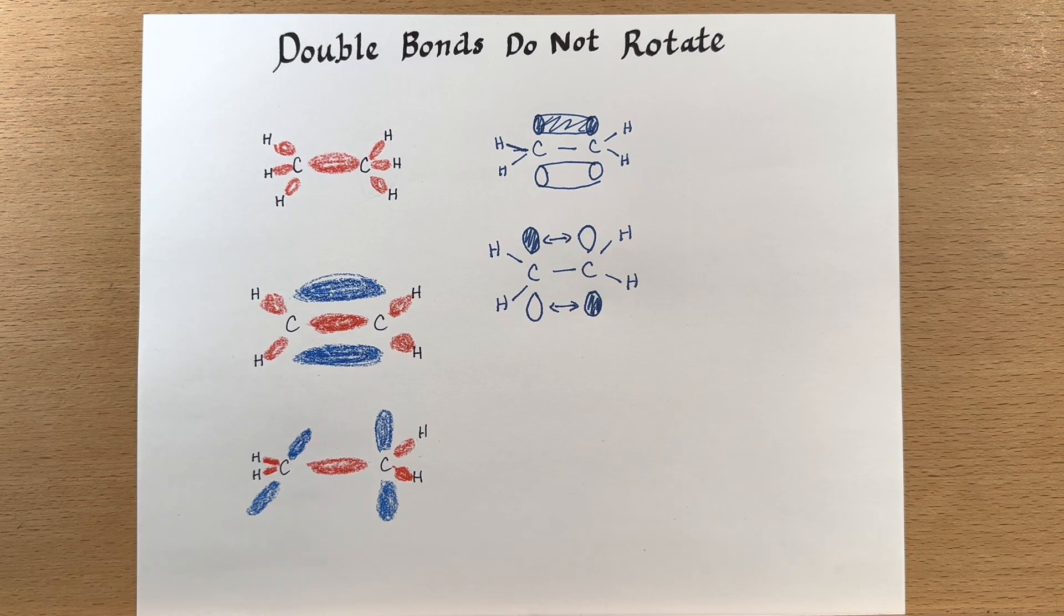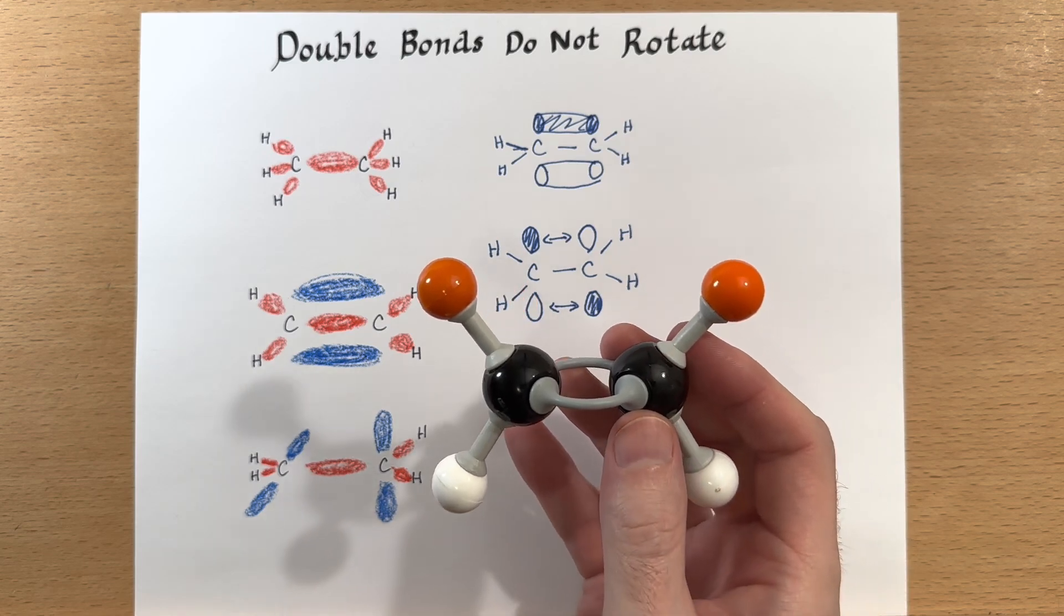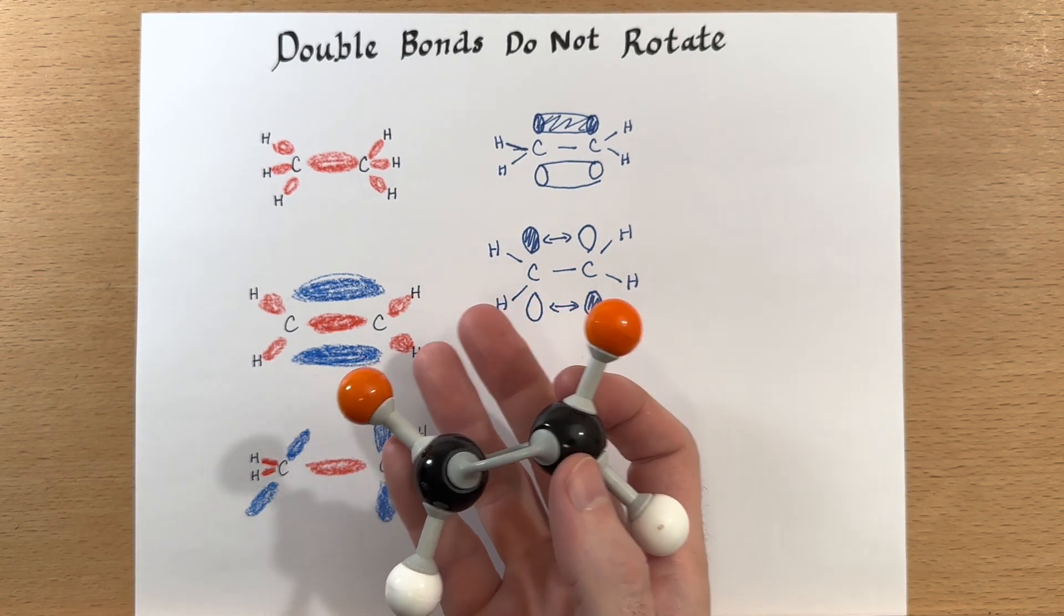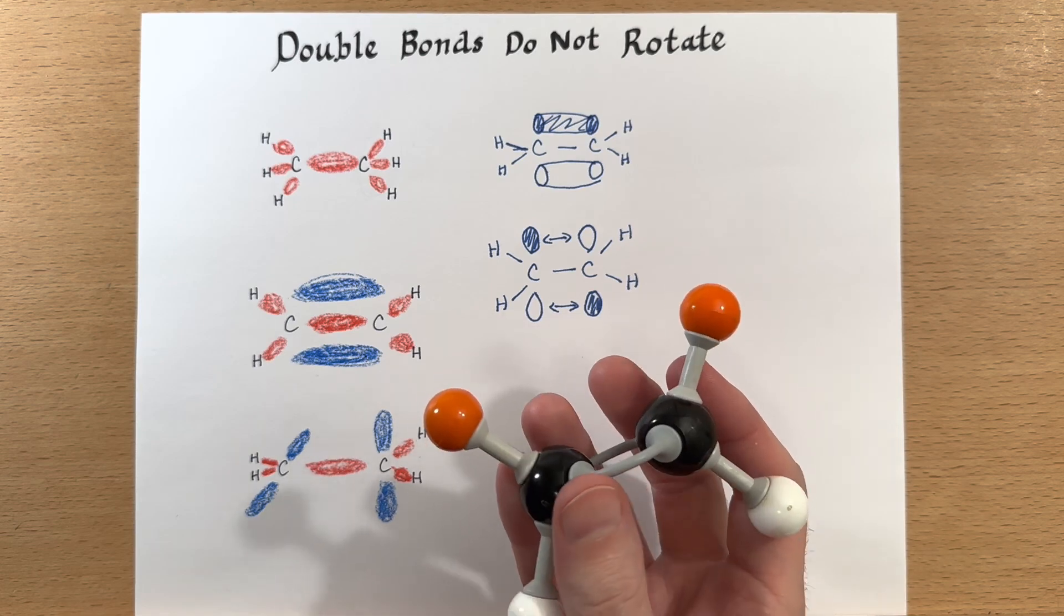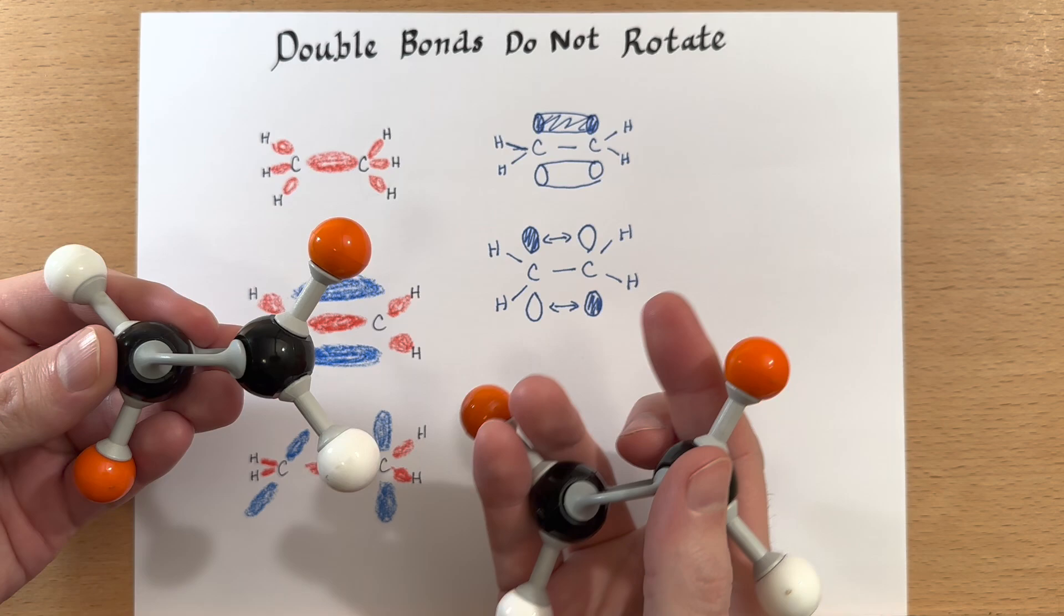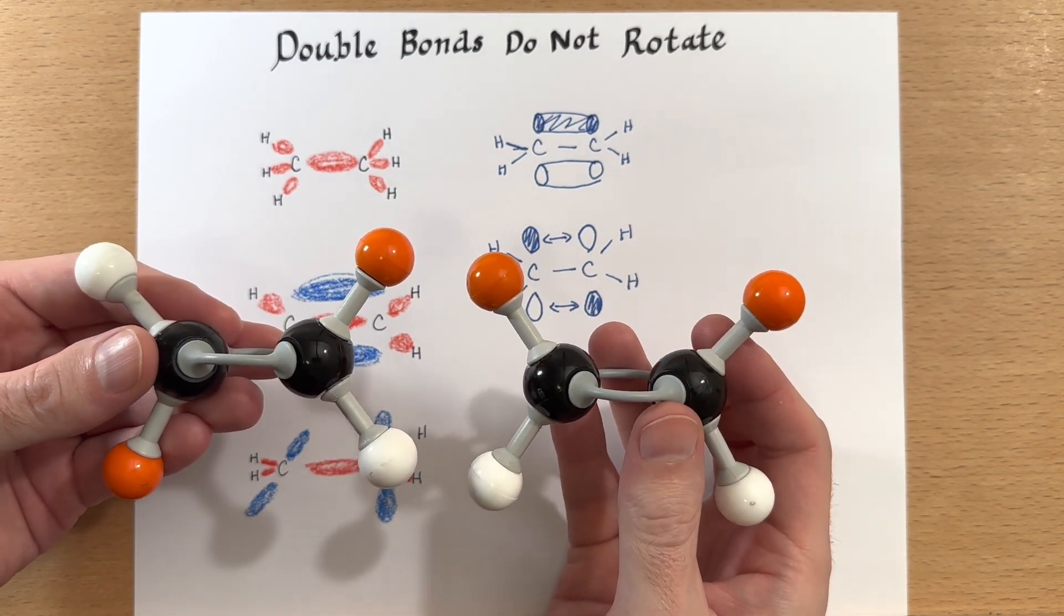Now, as a consequence of this, we have isomers, molecules that have the same chemical formula but a different configuration and some different properties. So in this case, I've put a couple of bromines on our ethene so that we can see some difference here. And these are two different molecules because the double bond is not able to rotate.